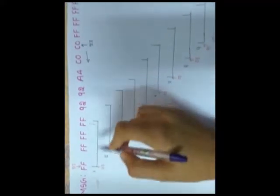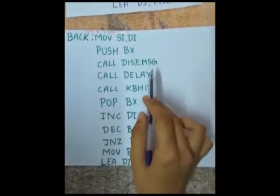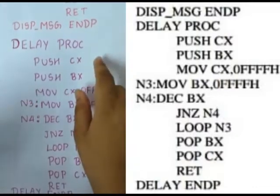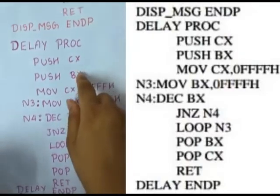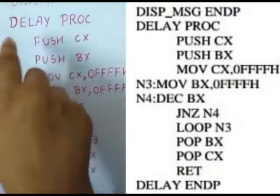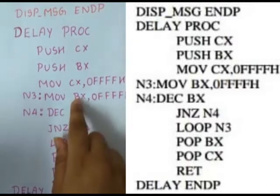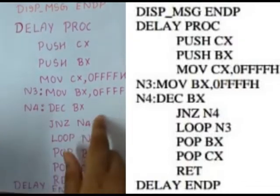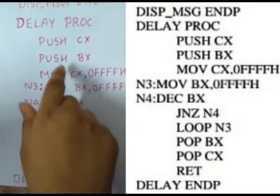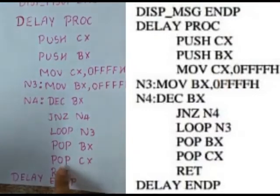After displaying the first set we need a time lapse before the next set, so we call a delay procedure. The delay procedure uses registers CX and BX for looping. We push CX and BX onto the stack and assign them the large number FFFH each. We decrement BX until it becomes 0, then loop back to the entry which automatically decrements CX. Once both CX and BX become 0 we exit the procedure.